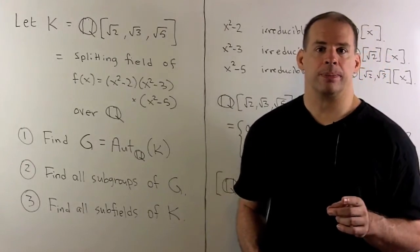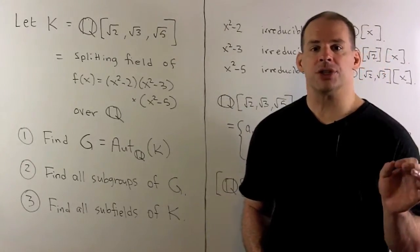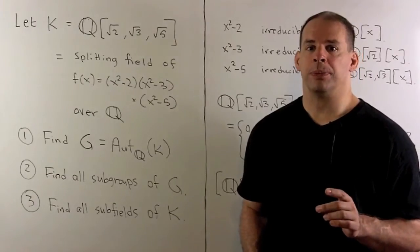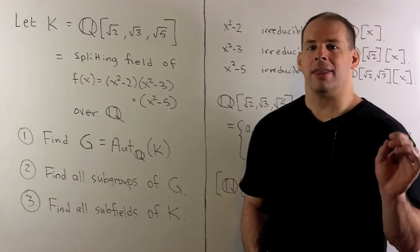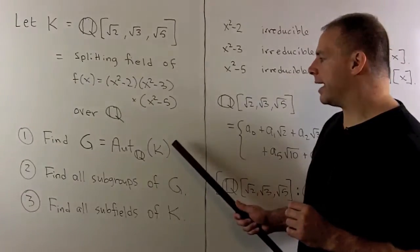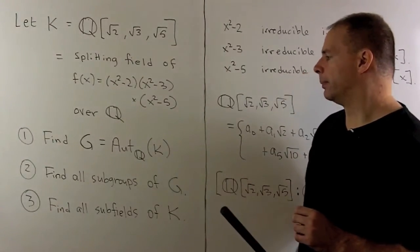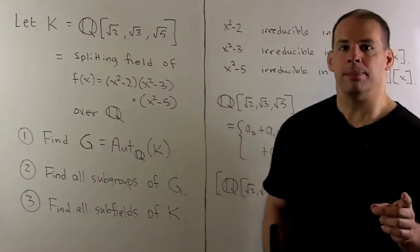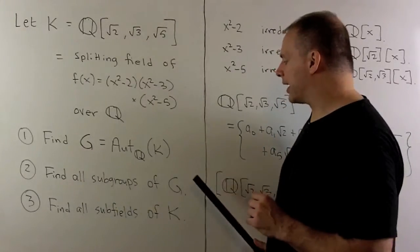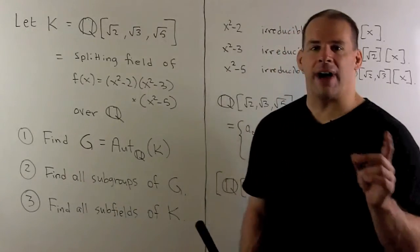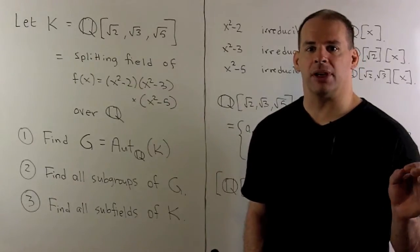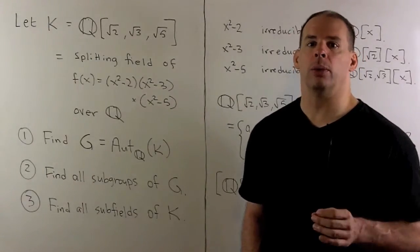We have three things to do. First, we want to find the Galois group of our polynomial — that will be the group of field automorphisms of K that fix Q. Then, we want to find all subgroups of our Galois group. Finally, we want to use that to find all subfields of K over Q.